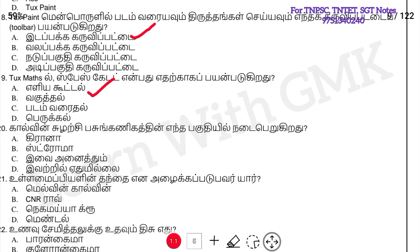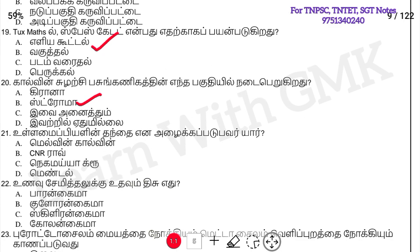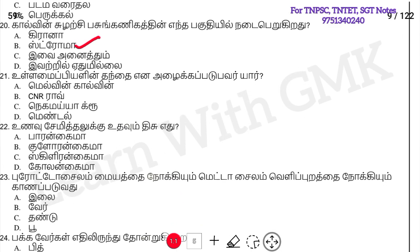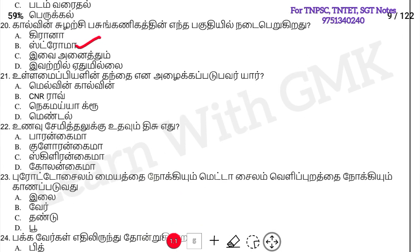Colvin Sulaichi, Colvin Sulaichi, Colvin Sulaichi. Option B: Stroma. Option B: Stroma. Option 21: Who is your father? Option C: Nekamaya. Crew.